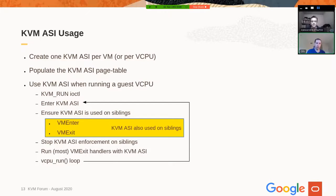After exiting the VM, we are still running with ASI and want to process the VM exits. The goal is to run most VM exits with KVM ASI. If we need at some point to exit to the kernel to run a handler, we do that. But because this is a loop, we re-enter and before doing the VM entry we re-enter the KVM ASI to be safe on the next run.